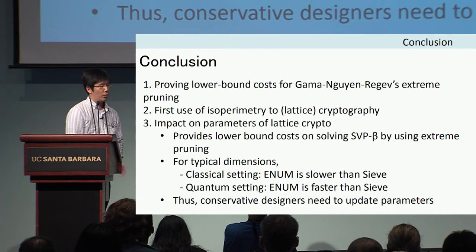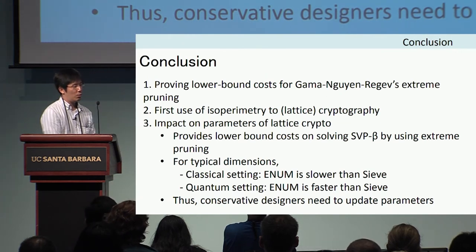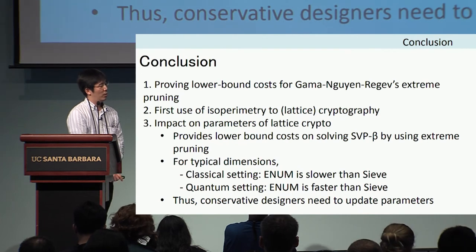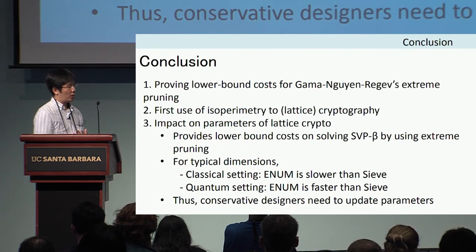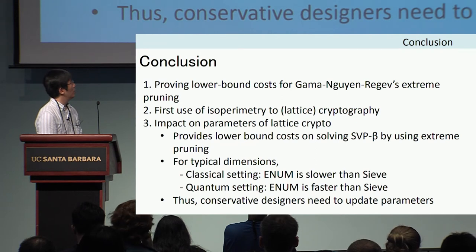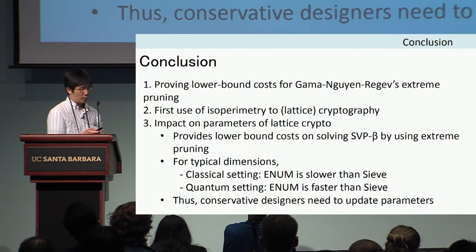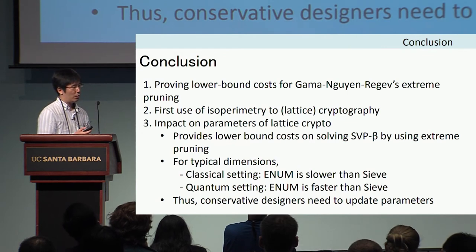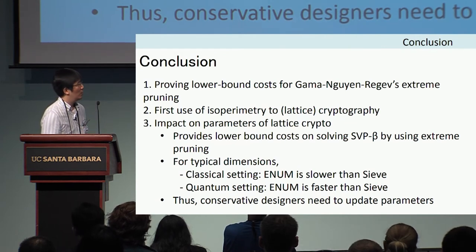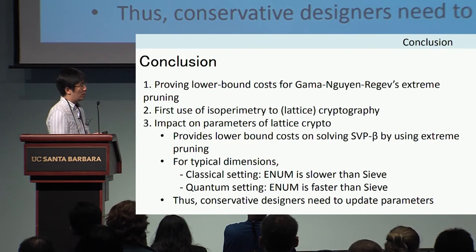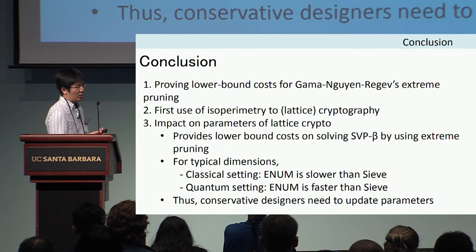To summarize concretely: we proved the lower bound cost for the GNR pruned enumeration with given probability, which is the first application of this type of bound to cryptography — perhaps publishable at a crypto venue. We also updated the lower bound cost for SVP beta using both classical and quantum enumeration.